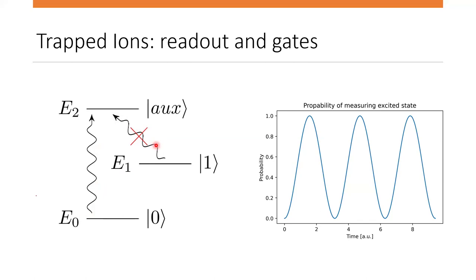Implementing single-qubit gates involves combinations of pulses of different phases and durations. For example, a graph shows the probability of measuring the excited state depending on the duration of light with constant phase equal to zero. This is how we can create a superposition of one qubit — simply by controlling the time of the pulse. This repeating pattern is called Rabi oscillations in the language of quantum mechanics. The phase and time of the pulses must be very precise, otherwise we won't have the desired computation outcome.